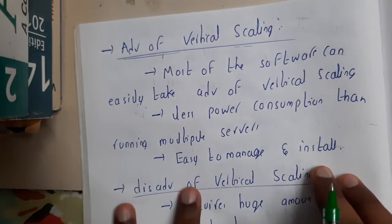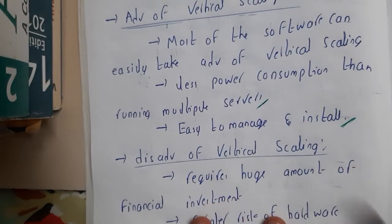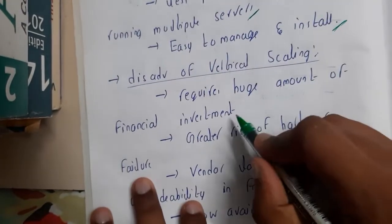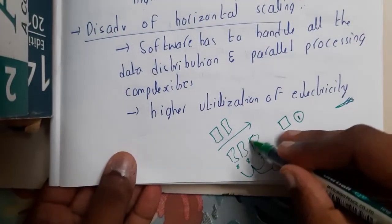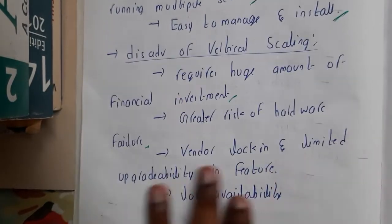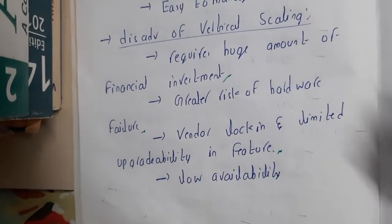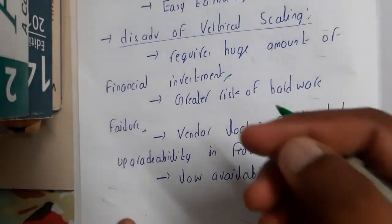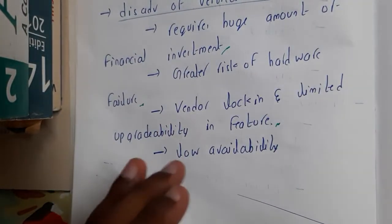The major advantages of vertical scaling are that software runs really smoothly, power consumption is low, and installation and management are easy. The disadvantages are high cost, greater risk of hardware failure — since you rely on a single system, if it fails your server goes down — vendor lock-in, limited upgrade flexibility, and low availability.